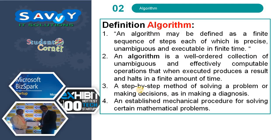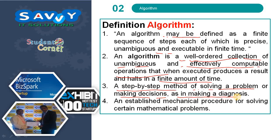The definition of an algorithm: an algorithm may be defined as a finite sequence of steps, each of which is precise, unambiguous, and executable in finite time. We are defining it in four ways — you can use whichever is comfortable for you. An algorithm is a well-ordered collection of unambiguous and effectively computable operations that, when executed, produces a result and halts in a finite amount of time. A step-by-step method of solving a problem or making decisions. The fourth definition: an established mechanical procedure for solving a certain mathematical problem.